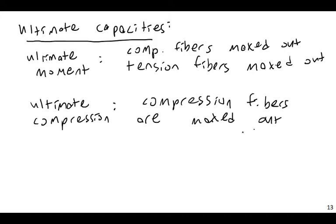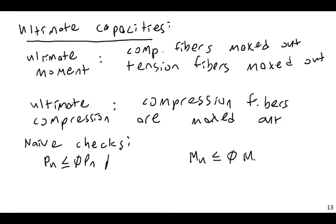So if I am naive, and I try to treat moment and axial force differently, I might say, naive checks: my P ultimate is less than or equal to my phi PN, I'm good. And my M ultimate is less than or equal to my phi MN, I'm good.